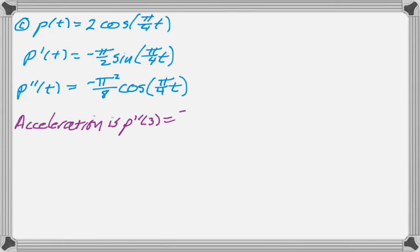So that's going to be equal to negative pi squared over 8. And then the cosine of 3 pi over 4 is negative radical 2 over 2. And I'm going to simplify that just because I can. So that's the acceleration. That's the first part of the question.